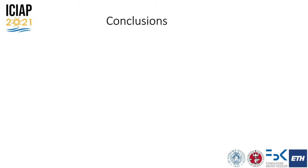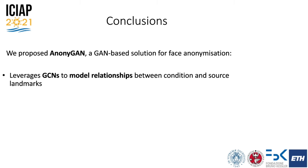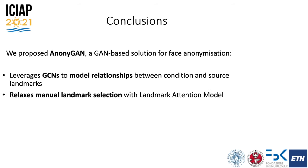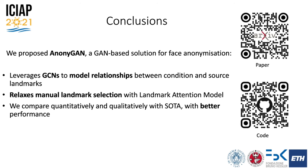To summarize, we proposed AnonyGAN, a GAN-based solution for face anonymization which uses a graph convolutional network to perform geometric reasoning between the landmarks of faces. We do not apply any manual selection on them and let the network automatically weigh the importance. We compared with state-of-the-art and achieved better performances in terms of visual quality and pose preservation. For more details, please refer to the paper and to the code on GitHub.